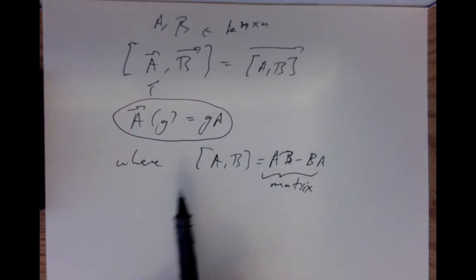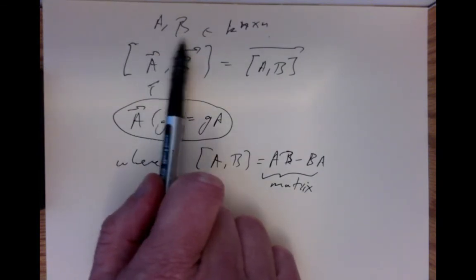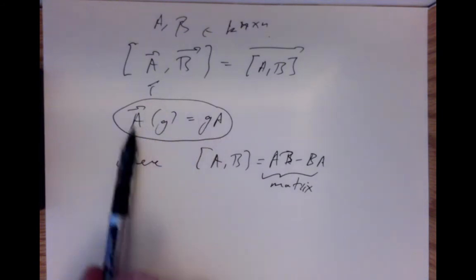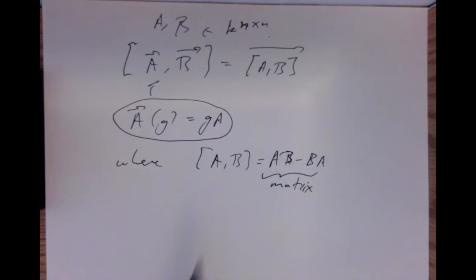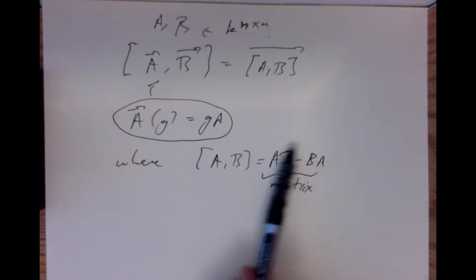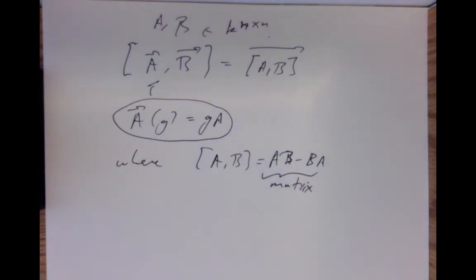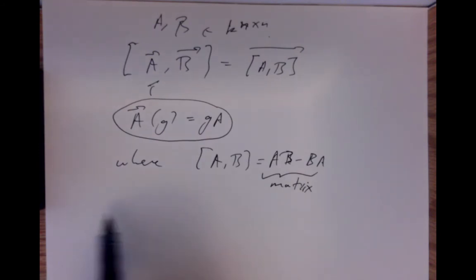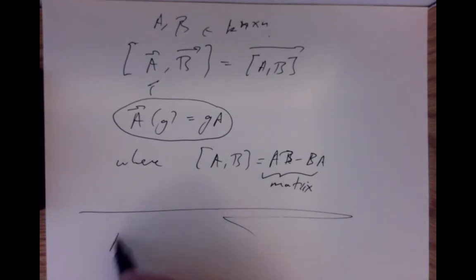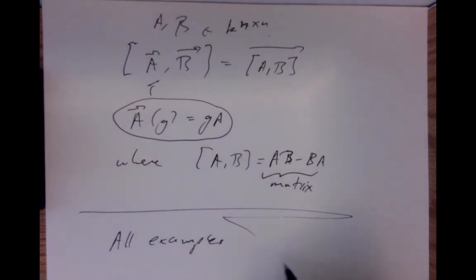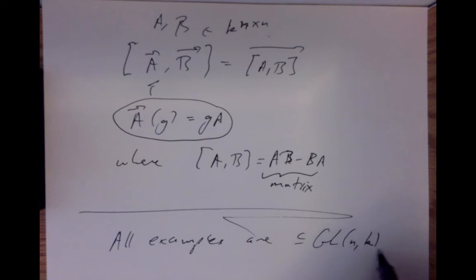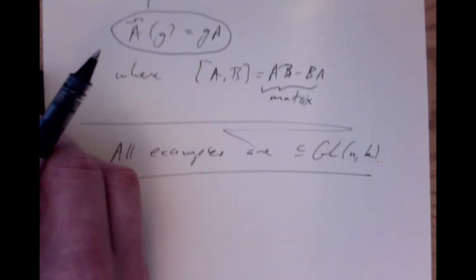So the bracket in the Lie algebra of GL(n,K) is just the ordinary commutator bracket of matrices: [A, B] = AB − BA. This is very computable. Furthermore, almost all examples are subgroups of some GL(n,K), so we know all the brackets for all the examples. Let's work out SO(3), the 3×3 rotation matrices. By the same computation as for the orthogonal group, the Lie algebra so(3) is the set of 3×3 anti-symmetric matrices.